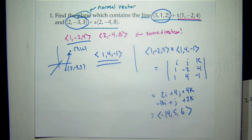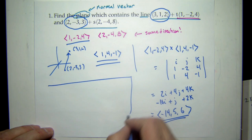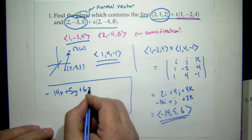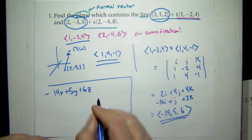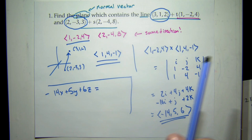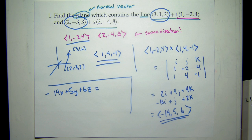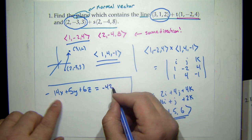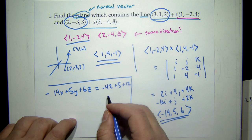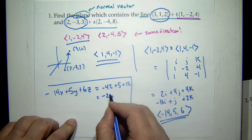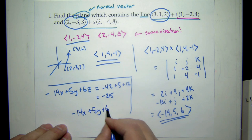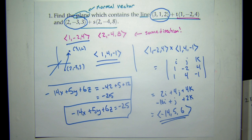Now that I have my normal, my plane will be −14x + 5y + 6z = something. The normal gives the coefficients in front of x, y, and z. To find the constant, I pick a point — I already have the point (3, 1, 2). Plugging in: −42 + 5 + 12 = −25. So the final answer is −14x + 5y + 6z = −25. Nice warm-up.